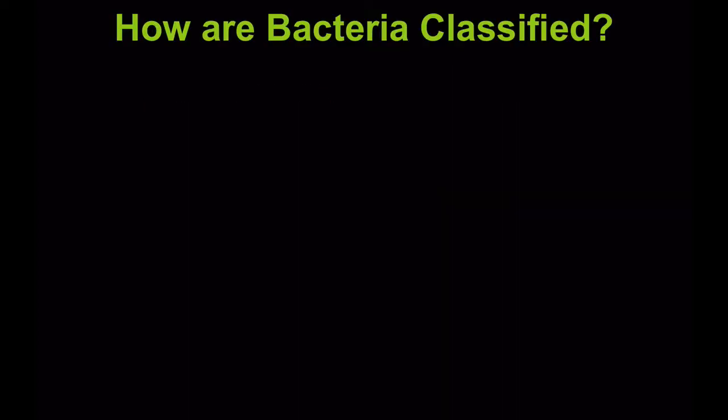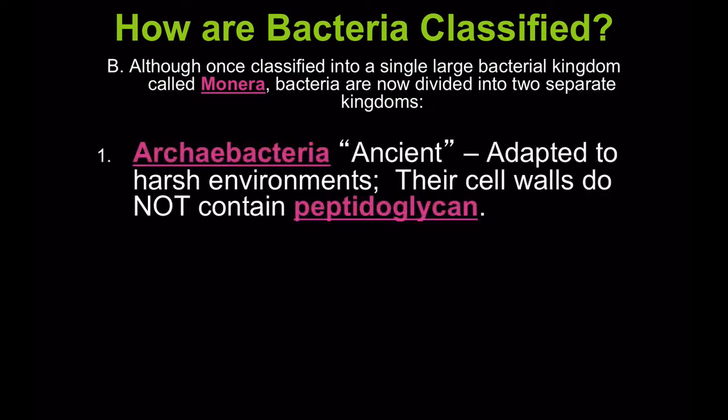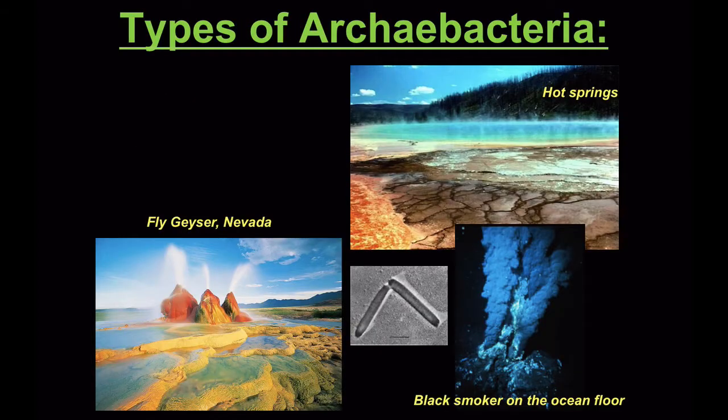So how are bacteria classified? Although once classified into a single large bacterial kingdom called Monera, bacteria are now divided into two separate kingdoms. Archaeobacteria, or ancient bacteria, are adapted to harsh environments. Their cell walls do not contain peptidoglycan.